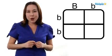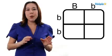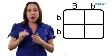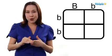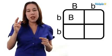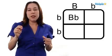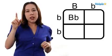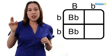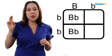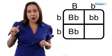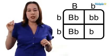Alright, it's time to do our cross. We're going to take one from the top and one from the left and bring them down into those squares. On our top we have big B and little b. Bringing them down: the top-left square gets big B, little b; the top-right square gets little b, little b; and the bottom-right square gets little b, little b.